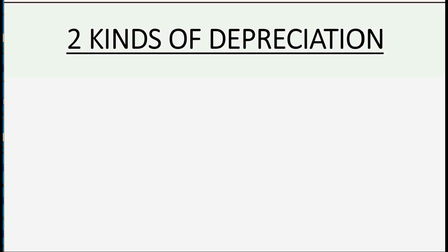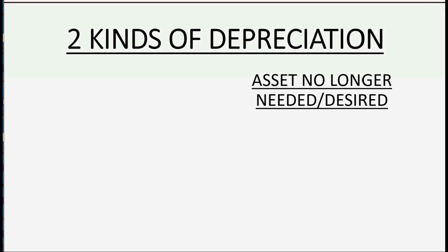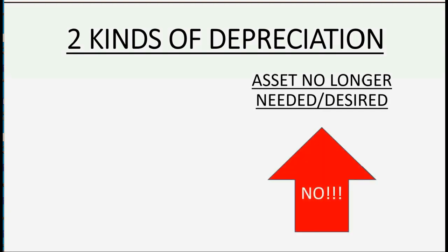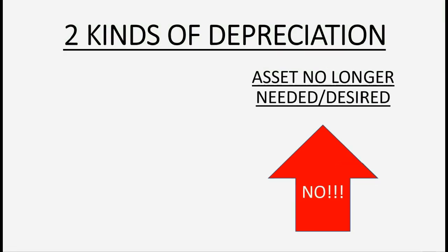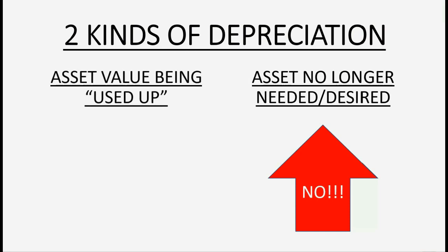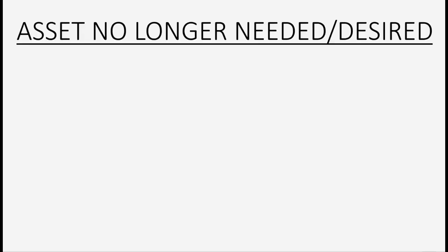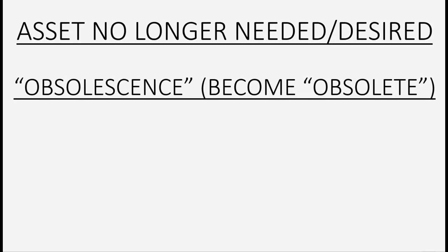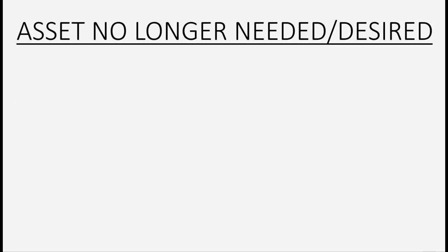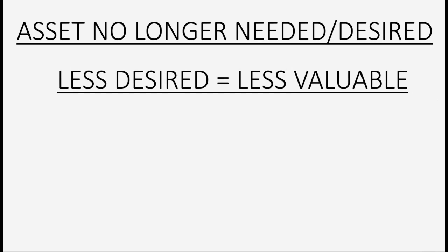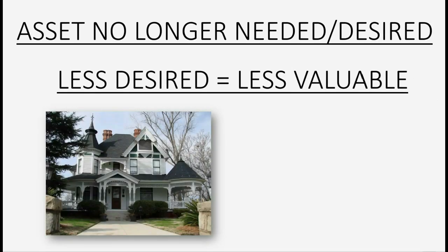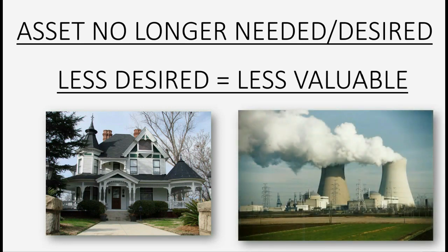There are two kinds of depreciation. There's the type that happens when an asset is no longer needed or desired — that's not the type we account for in bookkeeping. We are instead talking about the type that happens as you use the asset or use up the resource it represents. For example, you can buy a beautiful house worth a lot of money, and if a week after you purchase it they open a nuclear power plant just two blocks down the road, the asset value will decrease.